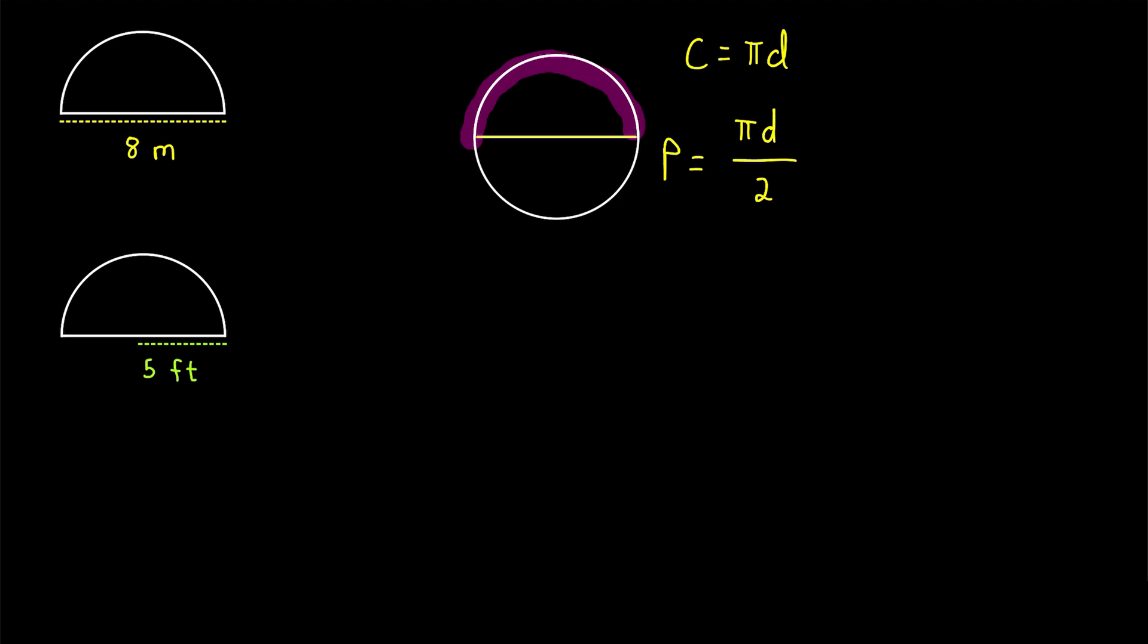The only other part of the perimeter is right here, which is a diameter of the circle. So that's it. We just have to add on the diameter.